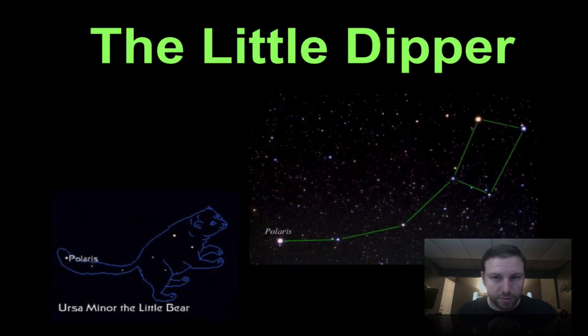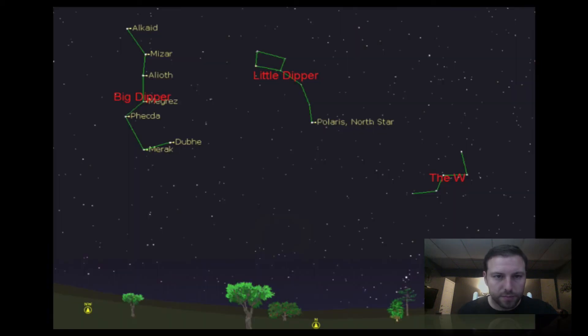Okay the Little Dipper and notice our important star right here. Polaris on the handle of the Little Dipper. And this is the most important part. Polaris on the Little Dipper can be found by looking at the Big Dipper and drawing a straight line over. And we can find Polaris. So it's an easy way to find Polaris in the nighttime sky.